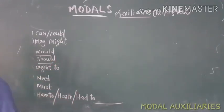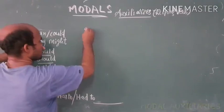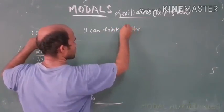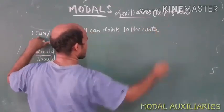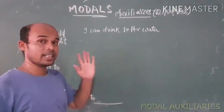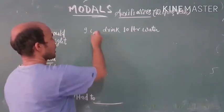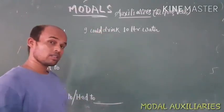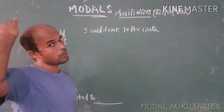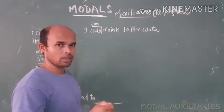So we have a total of 8 portions we will learn today. Let's take them one by one. Number 1: CAN. For example, 'I can drink 10 liters of water.' This expresses a present ability or capacity — that I can drink 10 liters of water right now. So to show the power or capacity of the present, we use can.